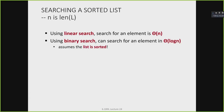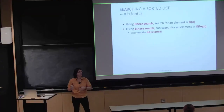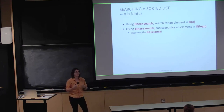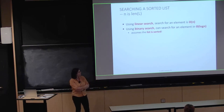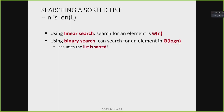We saw two algorithms to search for an element within a list. The first was a straightforward linear search, done on both an unsorted list and a sorted list. The worst case time complexity for searching using linear search was theta of n — that's the best we could do. We also saw the binary search algorithm as an alternate way to search, but the caveat was that we had to have a sorted list. Binary search does a much faster job at theta of log n time, which is faster than theta of n.